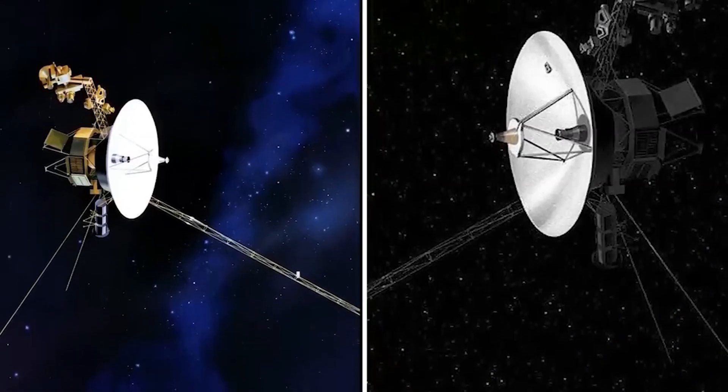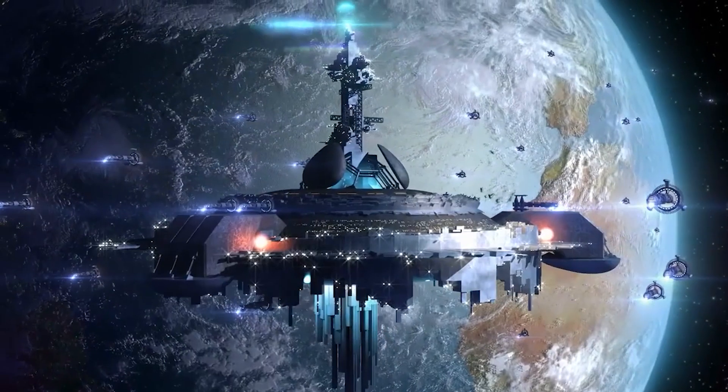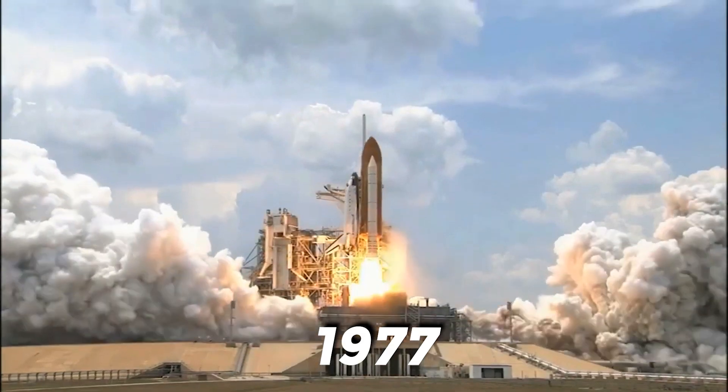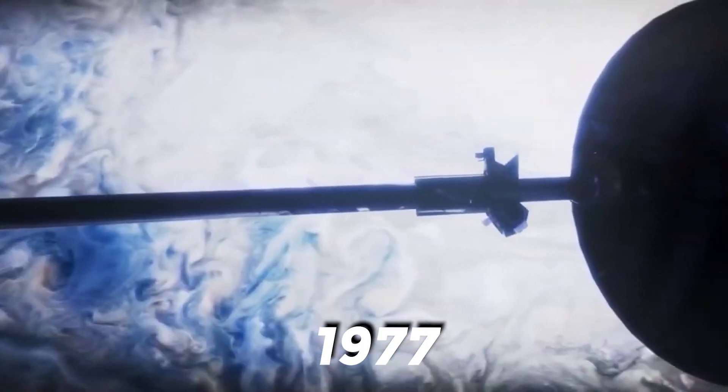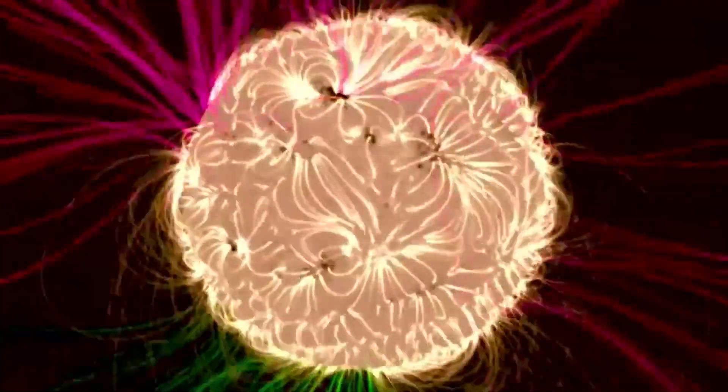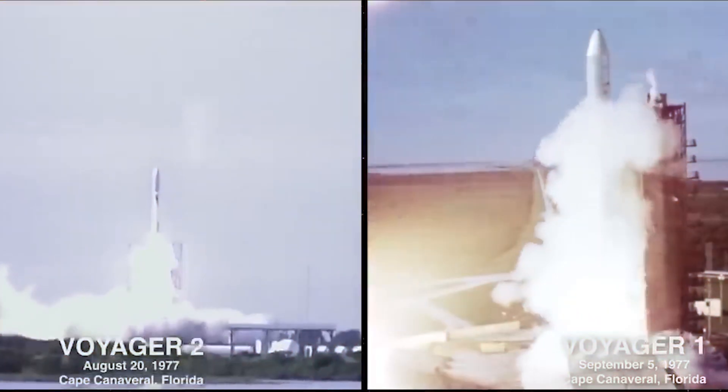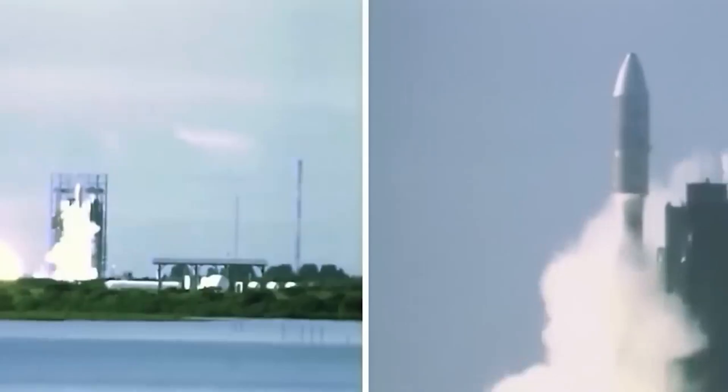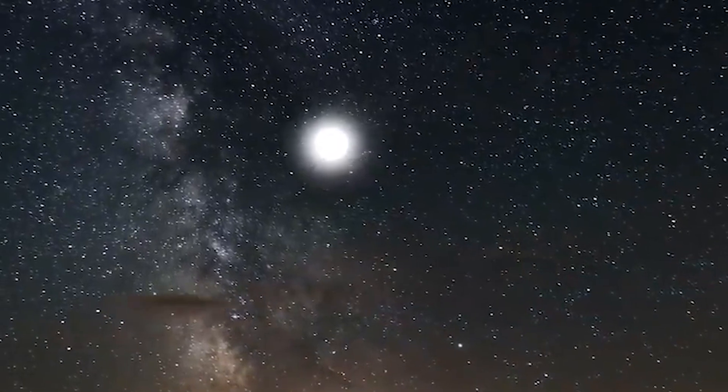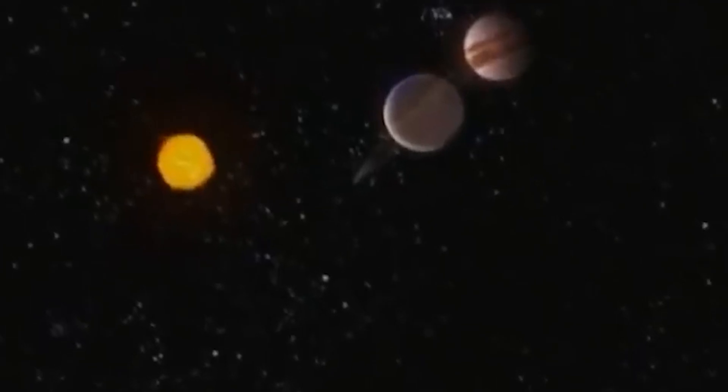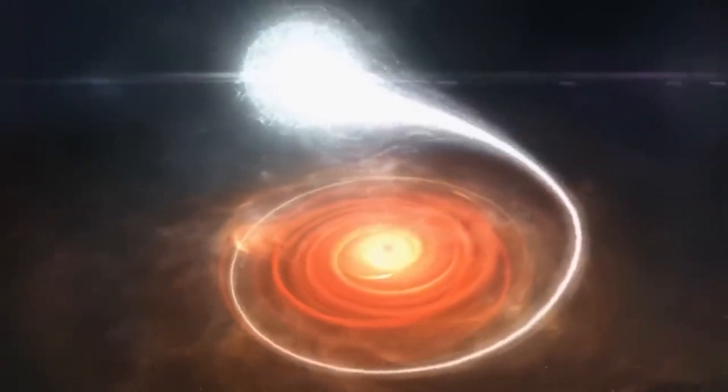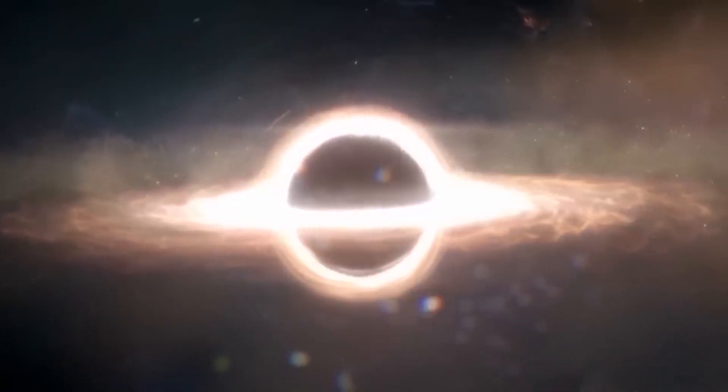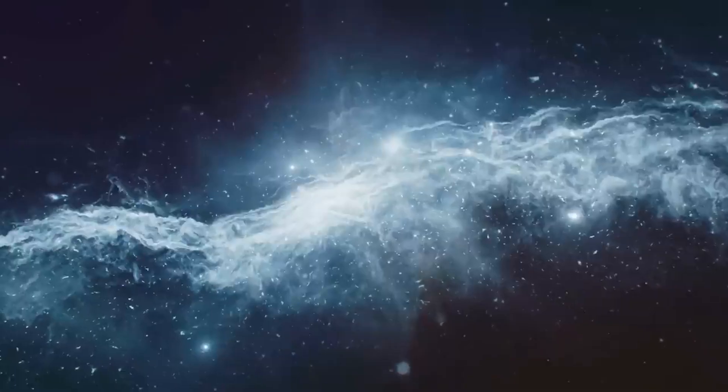The twin Voyager 1 and 2 probes were both launched in 1977 and are currently more than three times as far from Earth and the Sun as Pluto. The aim of the Voyager spacecraft is to characterize the far outer heliosphere, the far-off solar wind, and their interactions. We have been able to investigate the farthest limits of our heliosphere during this part of the expedition, as well as make the first hesitant steps in the areas that lie between the Sun-dominated zone and interstellar space.